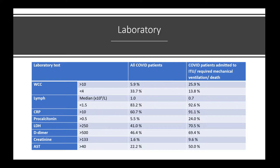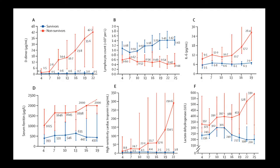Lymphopenia is also associated with increased risk of death. Six tables show blood test values versus days of admission, comparing survivors and non-survivors in COVID patients. Non-survivors are shown in red and survivors in blue. Rising D-dimer, IL-6, ferritin, troponin, and LDH are more associated with death, and lymphopenia is also more associated with non-survivors.